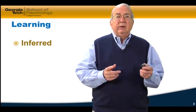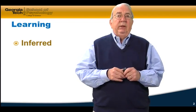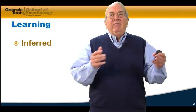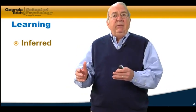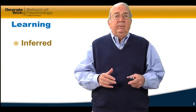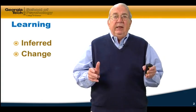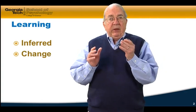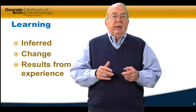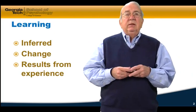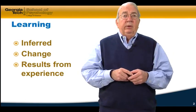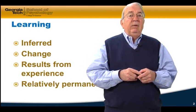When we talk about learning, we have to first realize that we infer learning has taken place. You can't see learning. You can't see perception. You can't see memory. You infer that it exists because of something that happens in behavior. If we see a change in behavior that's relatively permanent, we call that learning. Change is important because it's forming new associations, acquiring new information. It also results from experience — it takes some experience in the environment for us to learn.